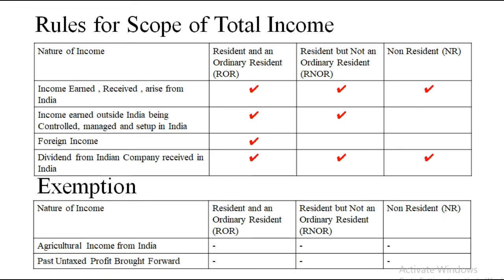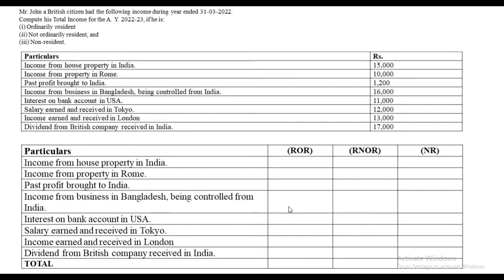Now let us see how to solve the sum based on these rules. The question given is: Mr. John, a British citizen, had the following income during the year 31st March 2022. Compute his total income if he is an ordinary resident, not an ordinary resident, and non-resident. You will note down particulars as given, then make three columns: resident and ordinary resident, resident but not an ordinary resident, and non-resident. That is the format of the sum.